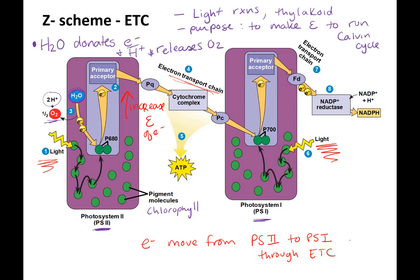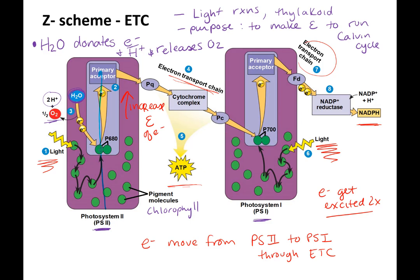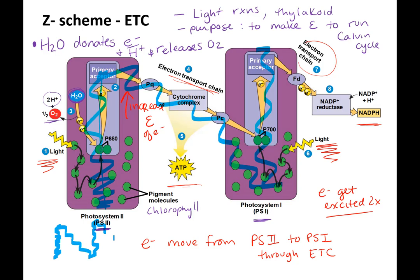Light comes in at two different places — there's light in photosystem 2 and light in photosystem 1. There's an electron transport chain, so electrons move from photosystem 2 to photosystem 1 through an electron transport chain, and they get excited twice. In the electron transport chain, just like in cellular respiration, the electrons are used to drive ATP production. The second time the electrons are excited there's a second electron transport chain, and they're used to drive the production of an electron carrier, NADPH. This is called the Z-scheme — it goes up, down, up again.